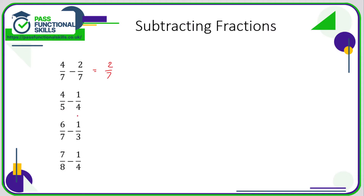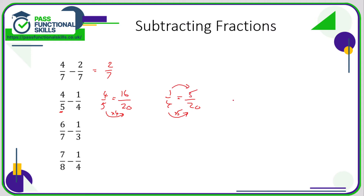Four fifths minus a quarter — we can't do this because the bottom numbers are different. Going through the five times table: five, no; ten, no; fifteen, no; twenty — yes, twenty can be divided by four. So four fifths becomes sixteen twentieths (multiply top by four), and one quarter becomes five twentieths (multiply top by five). The question is sixteen twentieths minus five twentieths, and the answer is eleven twentieths.